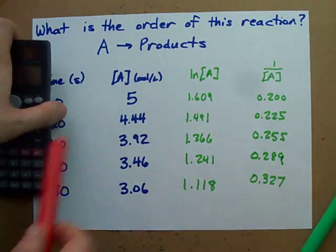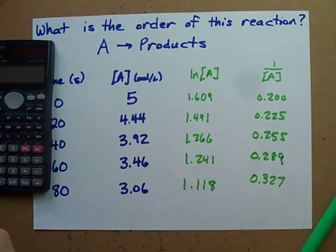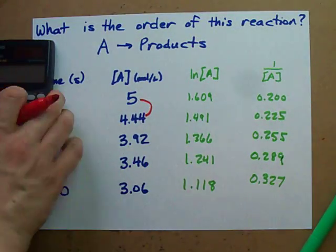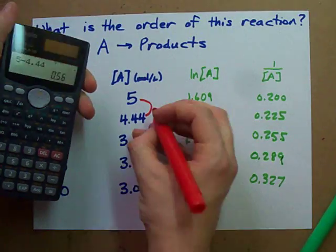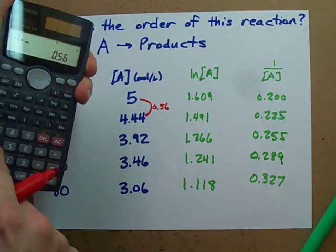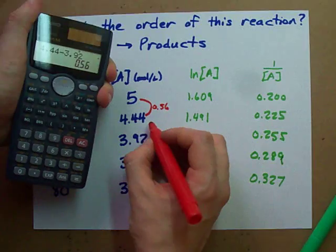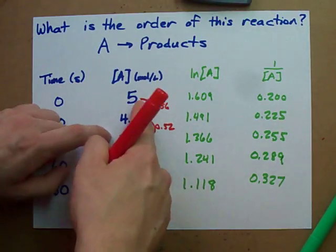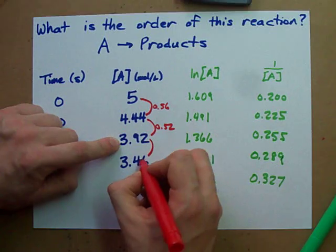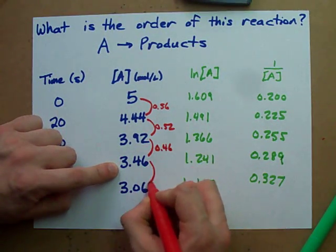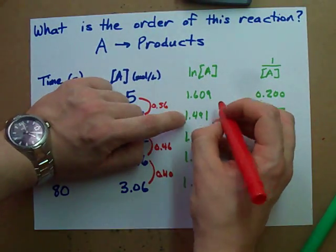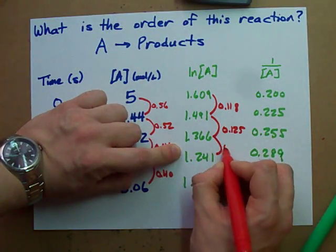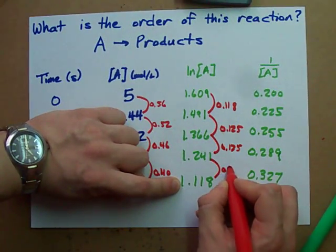Here's the key trick: calculate first differences — if you remember your grade 9 math. For [A]: 5 minus 4.44 is 0.56, and 4.44 minus 3.92 is 0.52. Do this for every pair: 3.92 minus 3.46 is 0.46. For ln[A]: the first differences are approximately 0.118, 0.125, and 0.125.